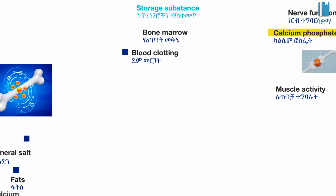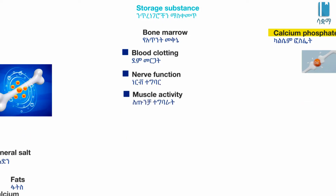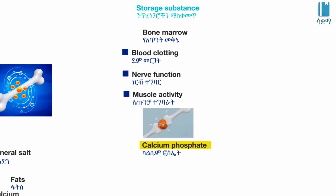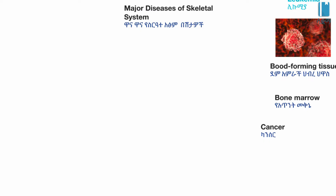The bones contain calcium phosphates, and the cells produced help support the immune system. Major diseases of the skeletal system include the following.